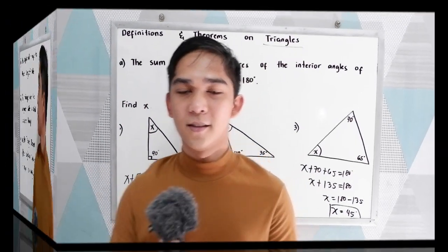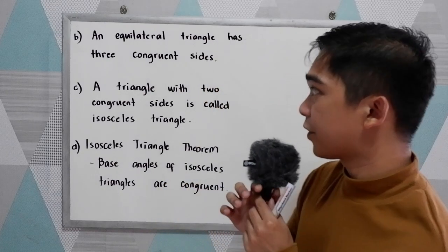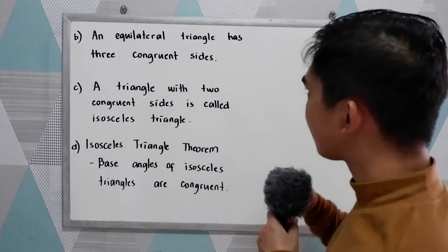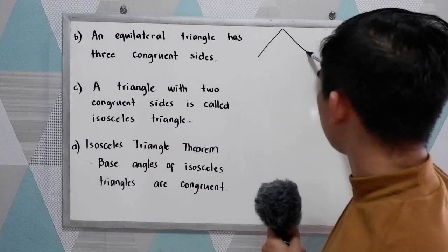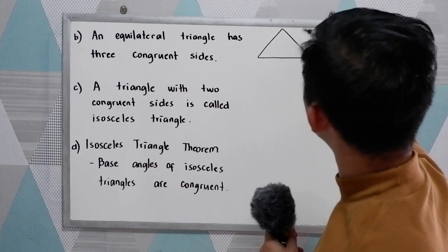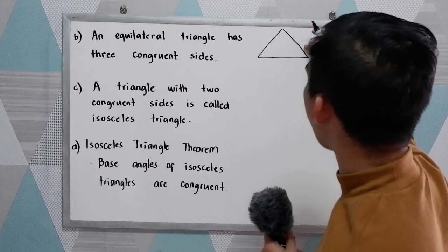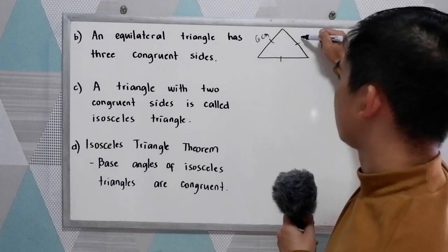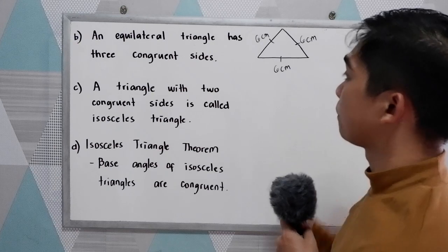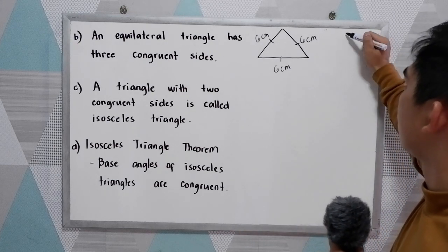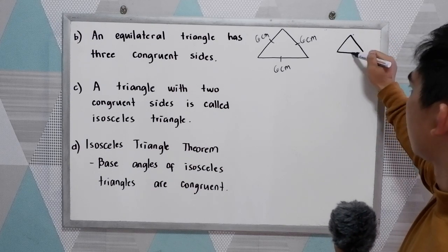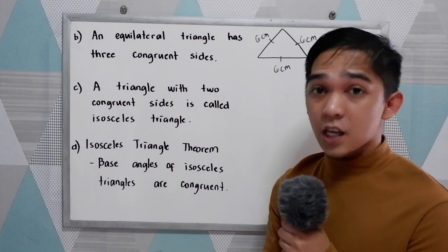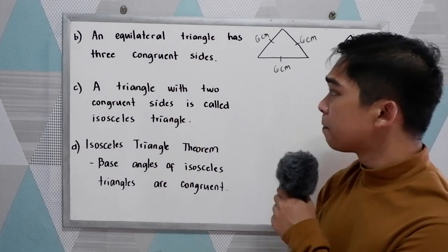That is our first definition. Now, we have letter B: an equilateral triangle has three congruent sides. If we draw the equilateral triangle, all the sides have the same measure. So, if this is 6 cm, the remaining sides also measure 6 cm. Equi means equal, lateral means sides. So, all the sides are equal.